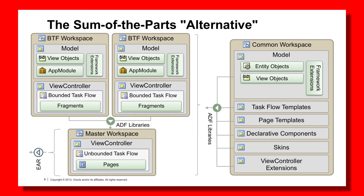The View objects that go in the Common workspace are those for list of values or business validation rules — basically View objects that are going to be reused across all the Bounded Taskflow workspaces. Conversely, the View objects in the BTF workspaces are View objects that are only used by that Bounded Taskflow workspace. Now, making that call is sometimes going to be a difficult exercise, because initially you might put a View object in a BTF workspace and later realize you did want it to be reusable. Unfortunately, JDeveloper doesn't make moving business components around very easy, so this is something you're just going to have to deal with.